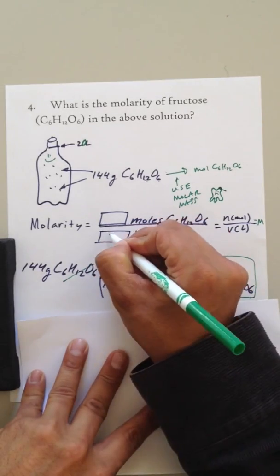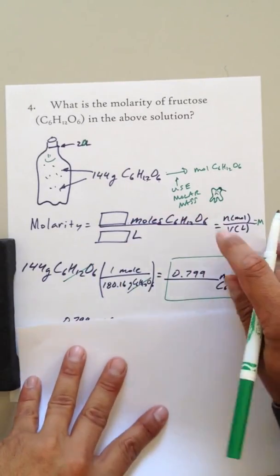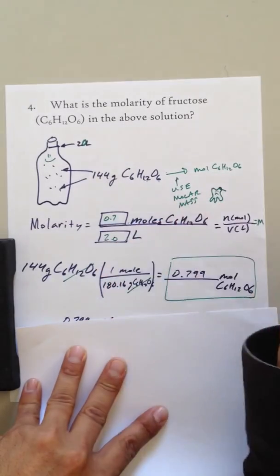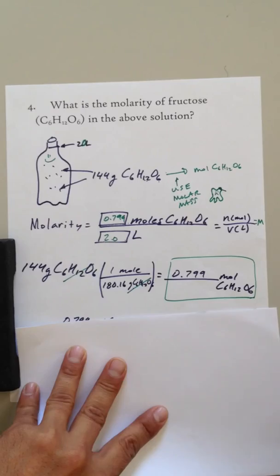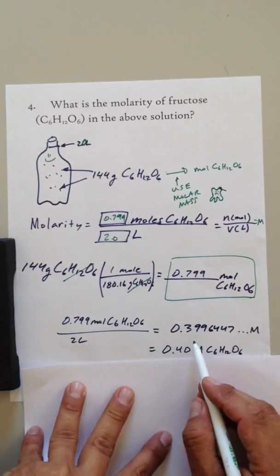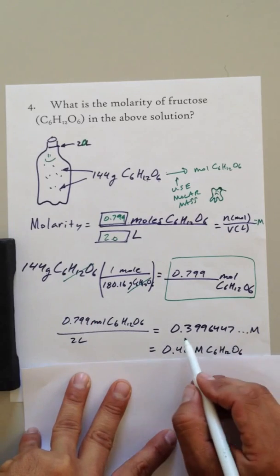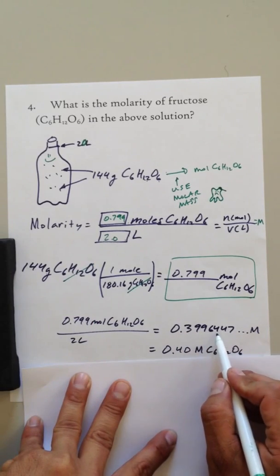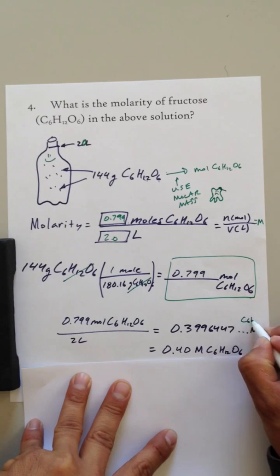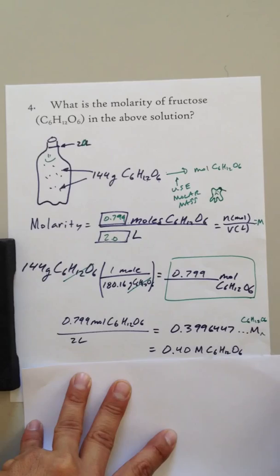We have the volume in, which is 2 liters, right? Now we have our moles, 0.799 moles of fructose. So let's just do this divided by this. And you do the math, and it goes... It's 0.3996447, it keeps going. Molarity of C6H12O6 of fructose.